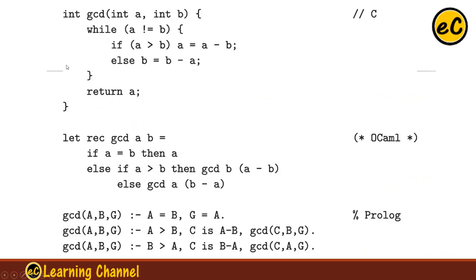Here are three text-based language examples. The first one is the GCD algorithm in the C language. The second one is also the GCD algorithm based on OCaml, a functional programming language, so it is based on functional code. The third one is Prolog, based on the rule-based logic reasoning programming paradigm. You can see the difference between these three programming languages and their paradigms. In the next lecture, we will focus on the Von Neumann programming paradigm, or control-based programming paradigm.